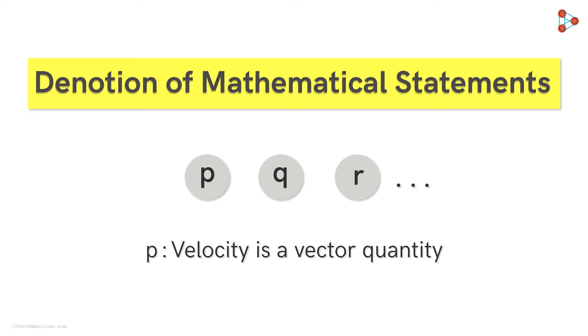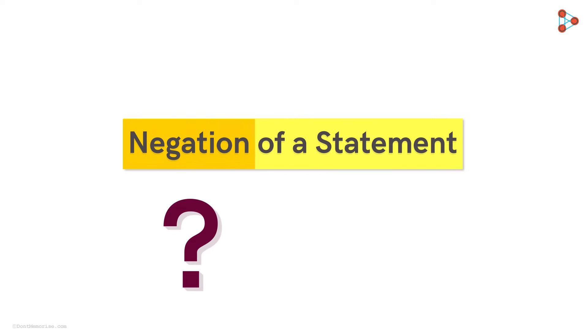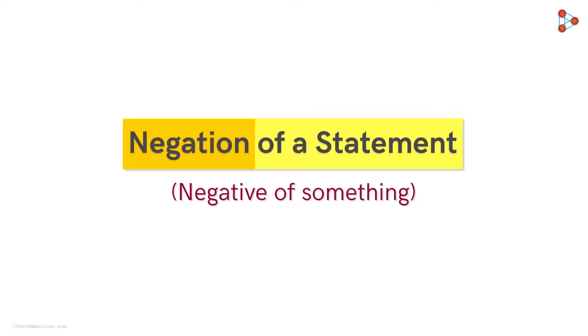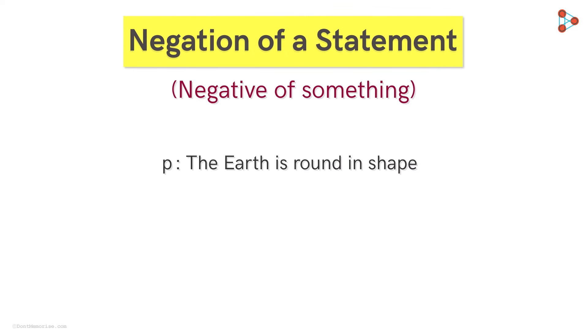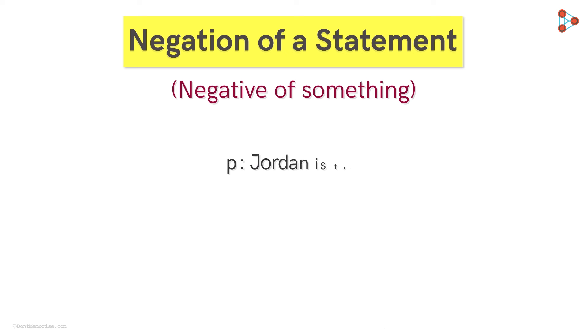Now that we've understood mathematical statements completely, let's try and understand the negation of a statement. So what does the word negation tell you? It's the negative of something. So for example, if I say the earth is round in shape, then what will be the negation of this statement? The negation would be the earth is not round in shape.